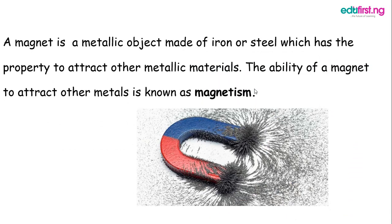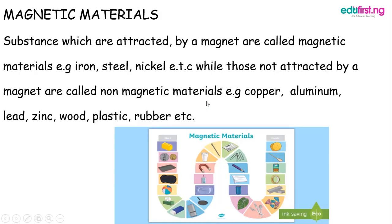But before we move on, what is a magnet itself? A magnet is a metallic object made of iron or steel which has the property to attract other metallic materials to itself.